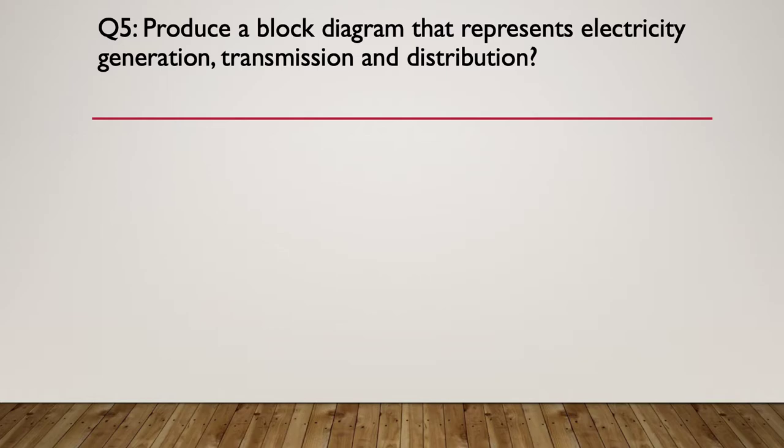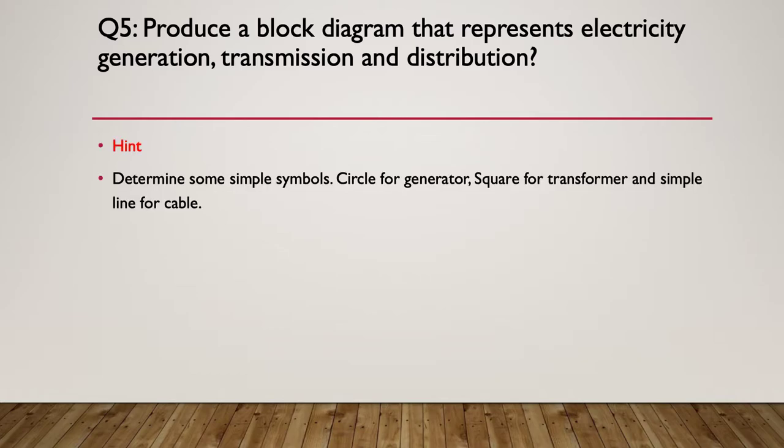Question five. Produce a block diagram that represents electricity generation, transmission and distribution. So pause the video here and do yourself a block diagram. Just keep it very simple, very linear. So here's our hint. Determine some simple symbols. Say a circle for a generator, a square for a transformer, and a simple line to indicate cables between these things.